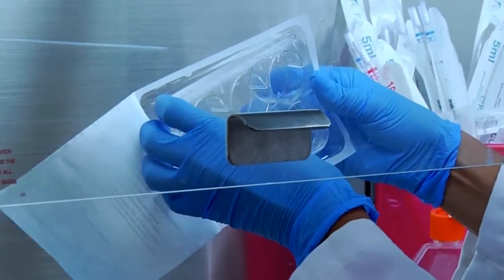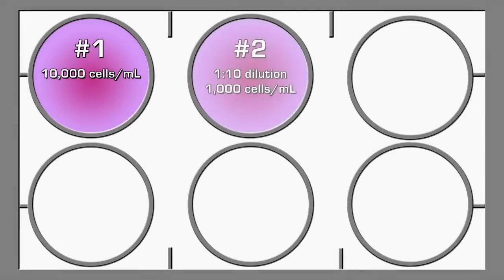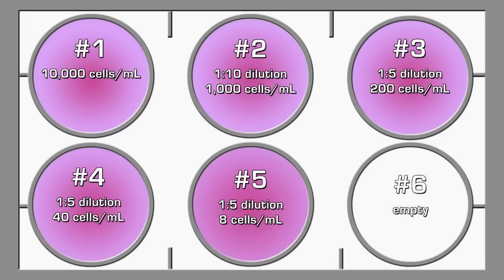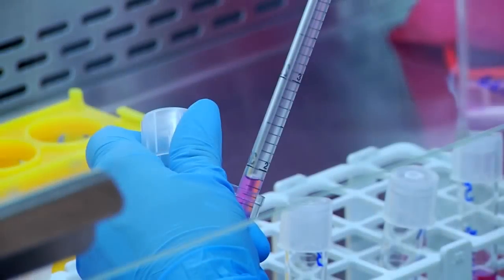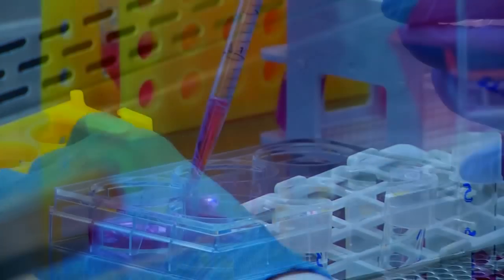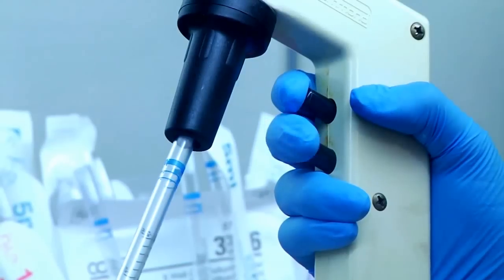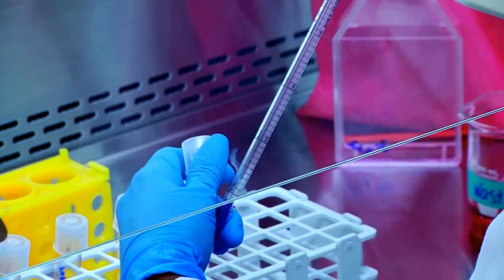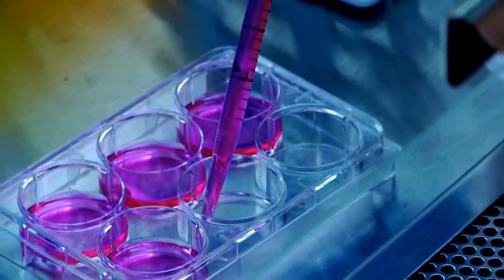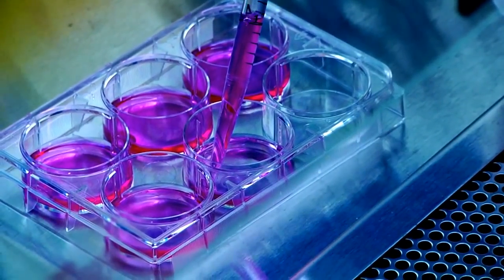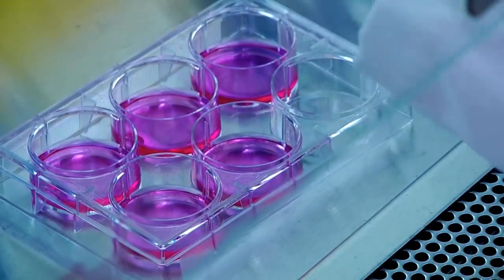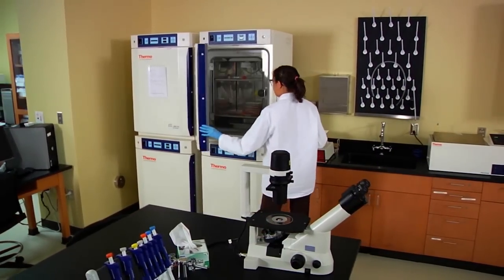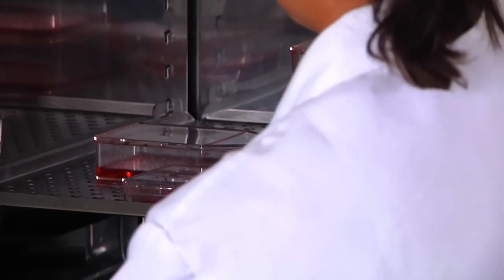Now we're ready to seed the 6-well plate. Transfer 2 milliliters from each tube to its corresponding well. Since we have 5 tubes, we'll only be using 5 of the 6 wells. Place the 6-well plate in the incubator and allow 1 to 3 weeks for colonies to form.